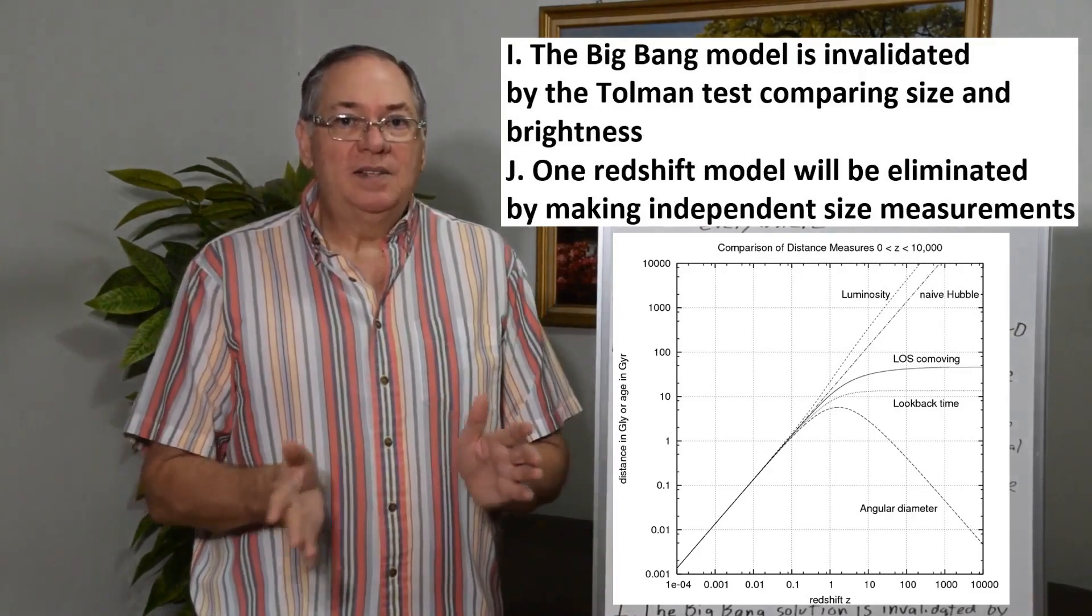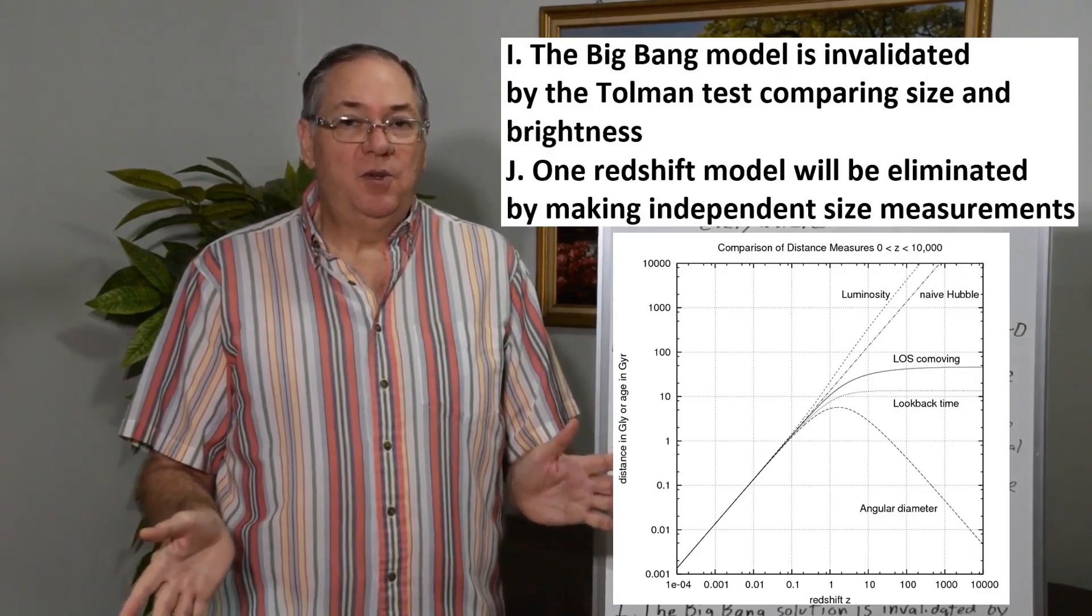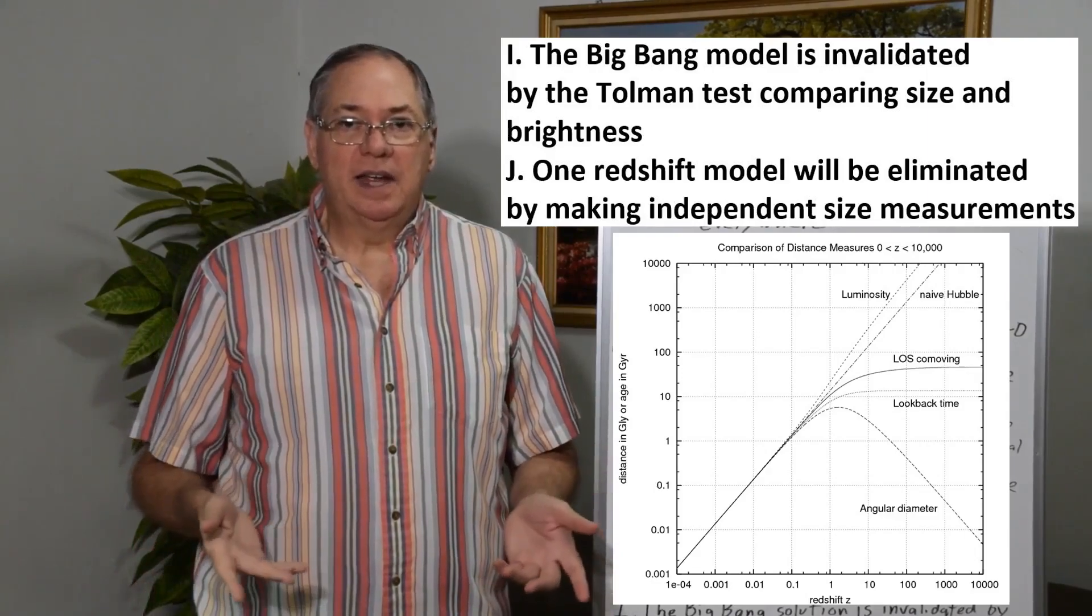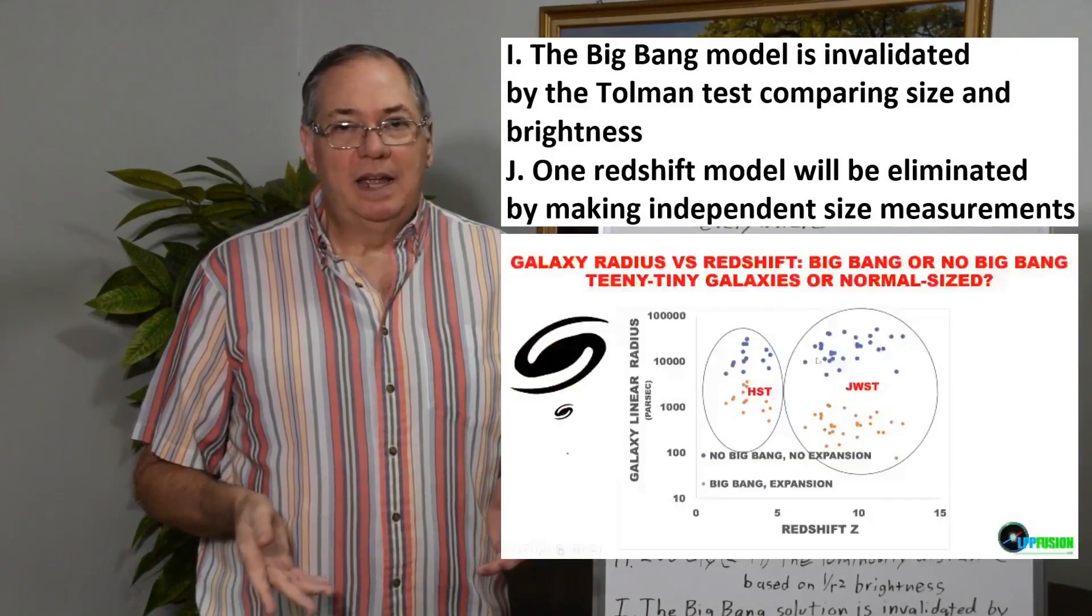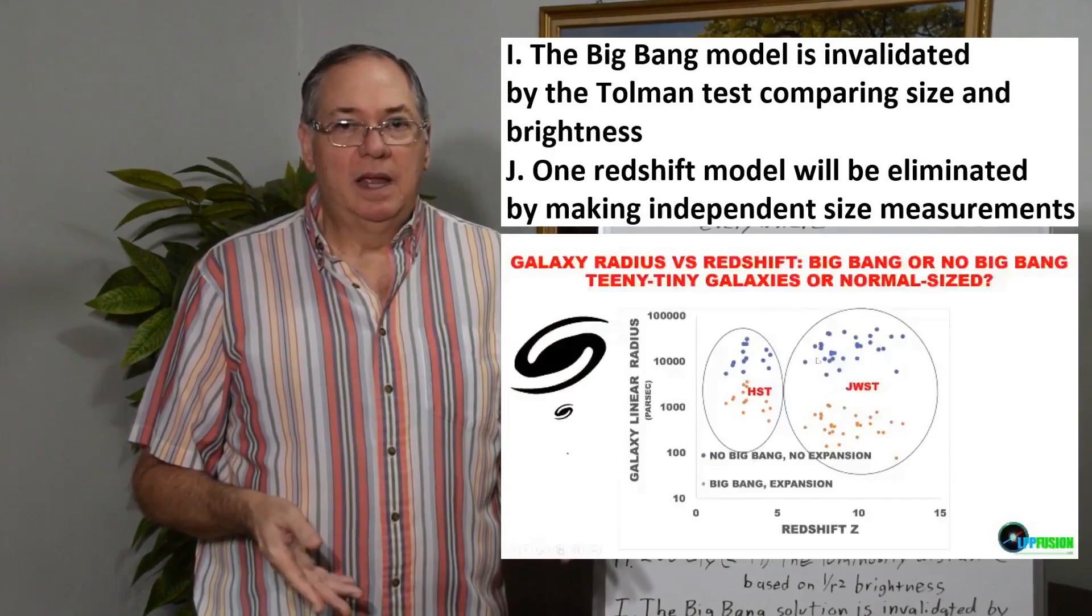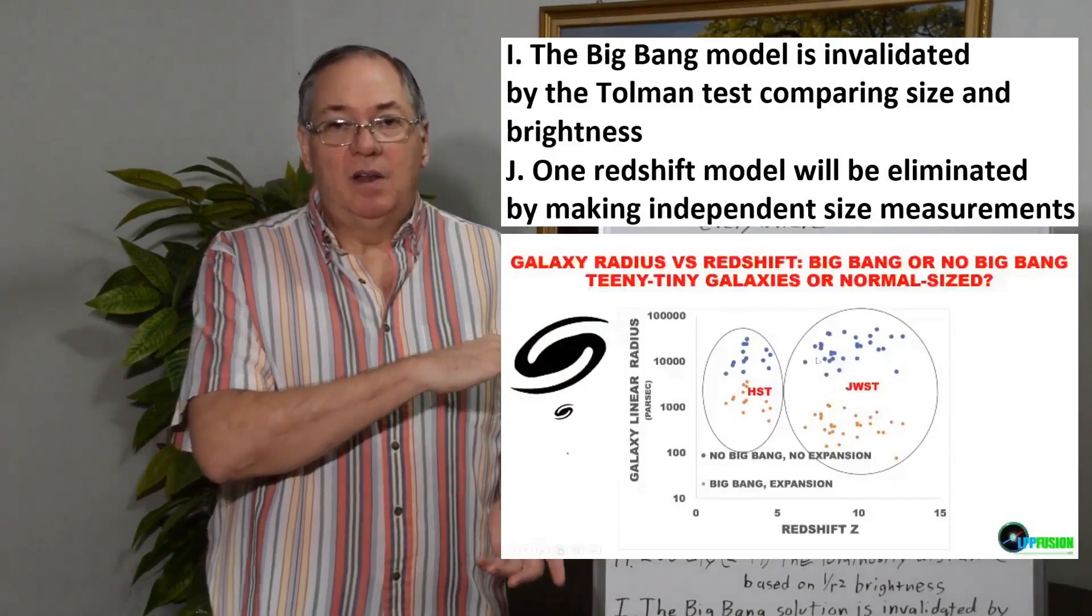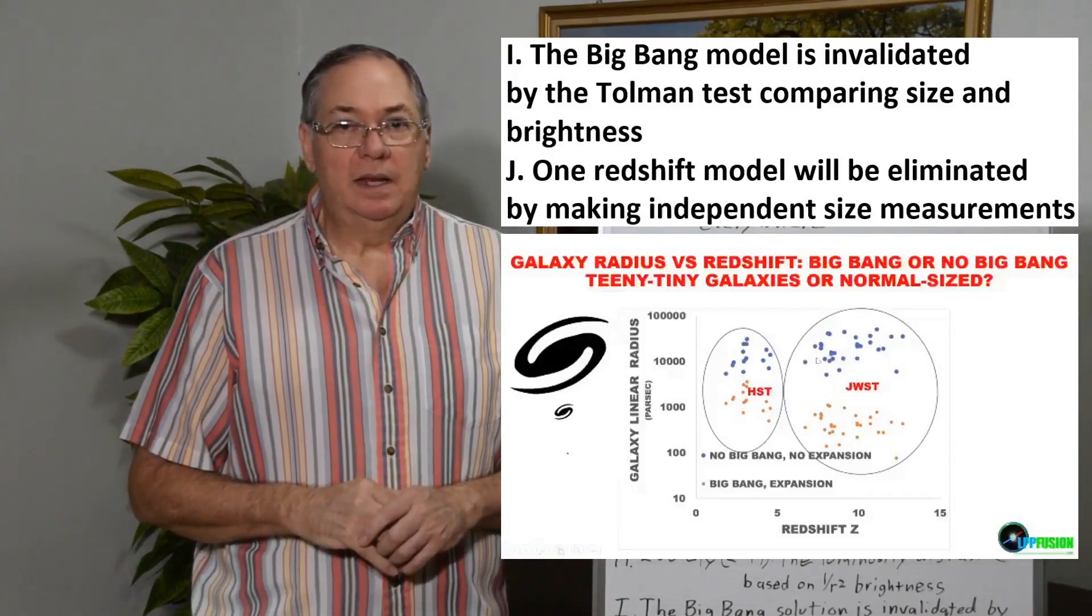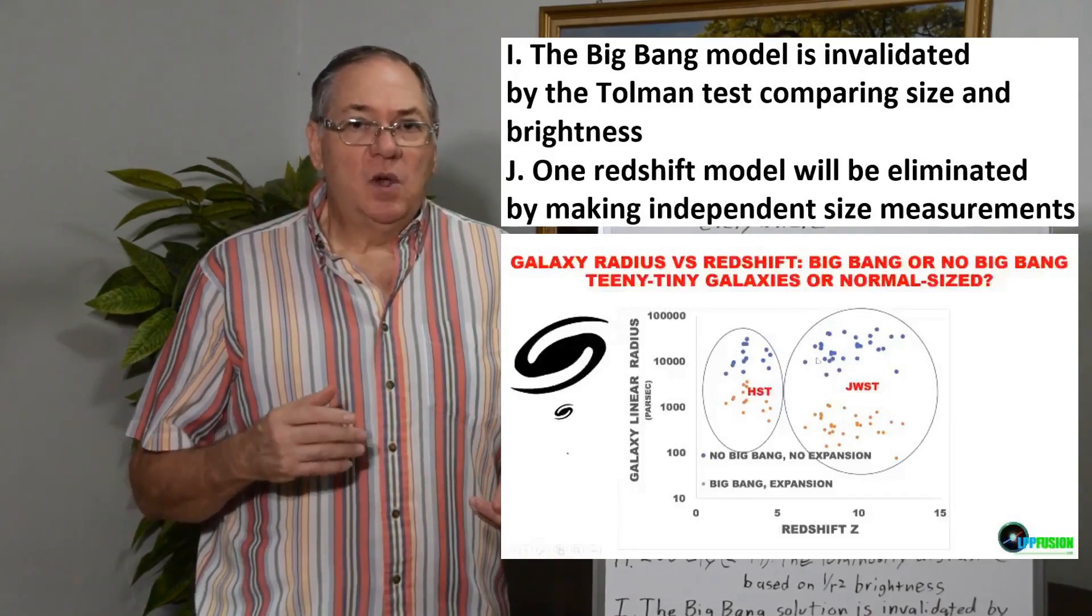So the size of the galaxies that we do and will observe at higher Z as we go and continue to collect data, will make it very clear which one's right. And so far, the data that Eric Lerner has examined is telling us that the galaxy's sizes follow the non-expanding model, the linear model in particular.